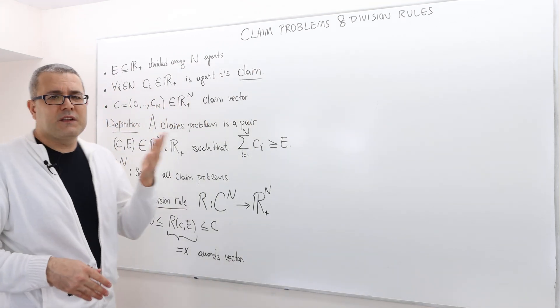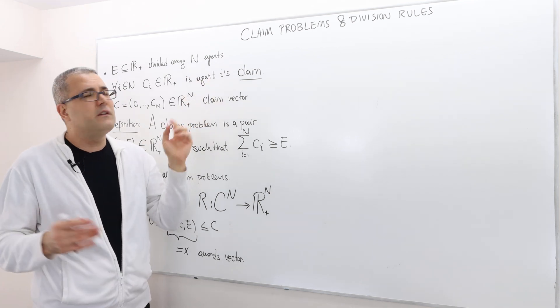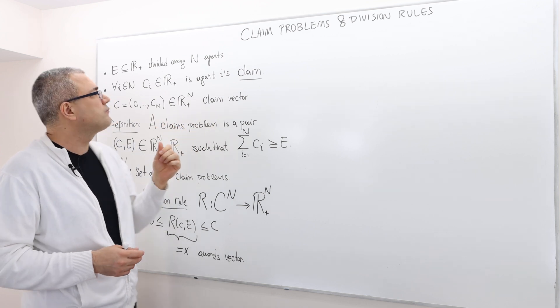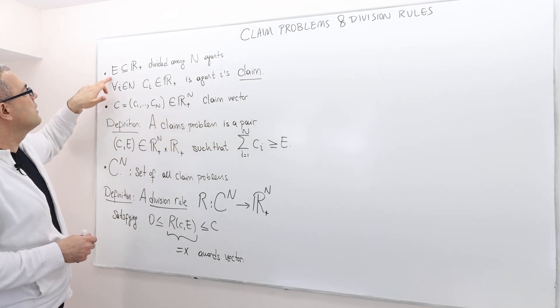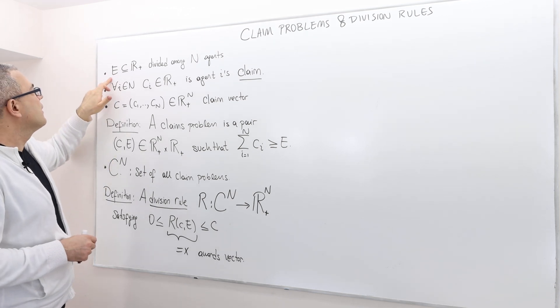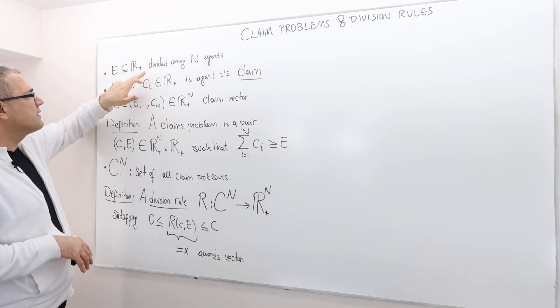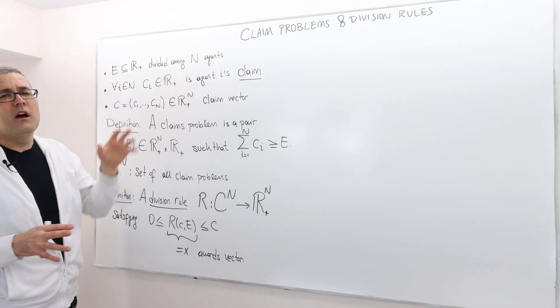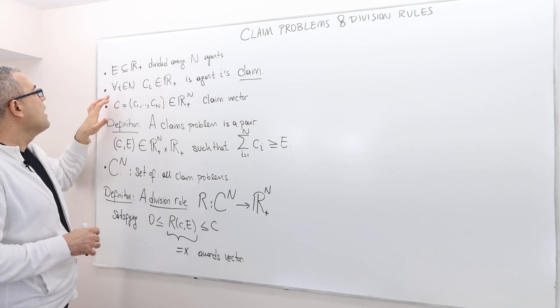So how do we model this problem? Sometimes we call these problems as bankruptcy problem. But in the formal lingo, we call them claims problem. So here's how we are going to model it. So we call E as the surplus. So there is some surplus E, which is non-negative, that is going to be divided among N agents. Obviously, this should be more than or equal to two.